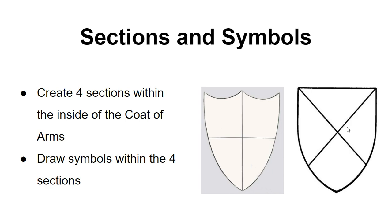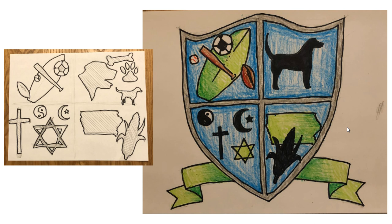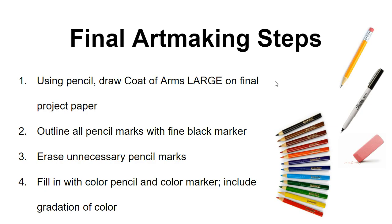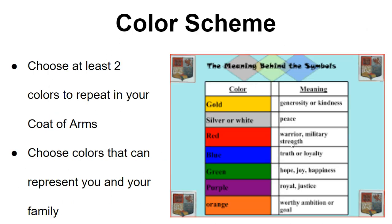Divide your crest up into four different sections and then transfer your images onto it with pencil. You want to draw large, filling the space, using a pencil. Then you're going to outline everything in a thin black marker. Next, erase all unnecessary pencil marks, and then finally fill your image with color using colored pencils or marker.